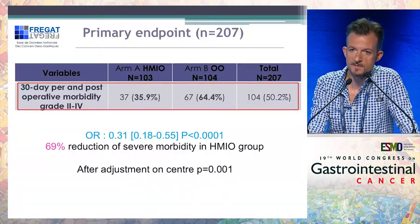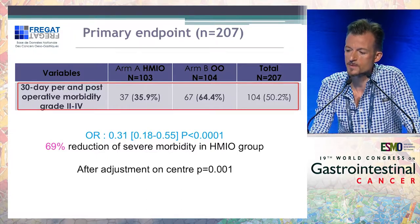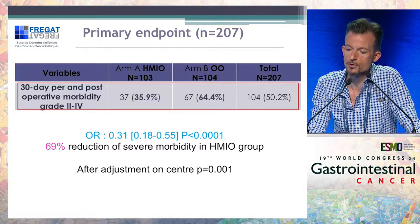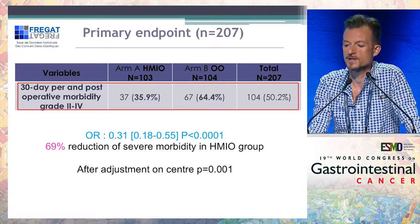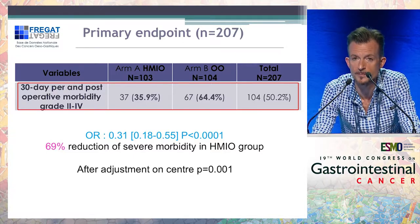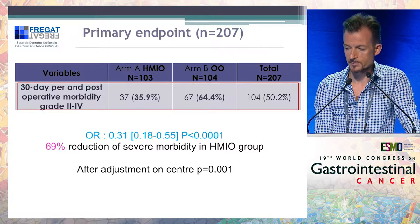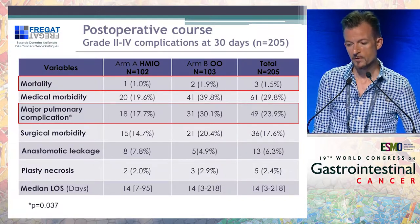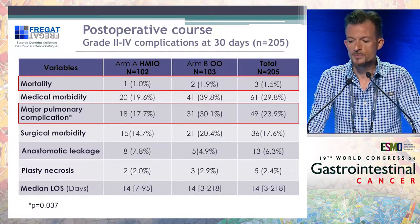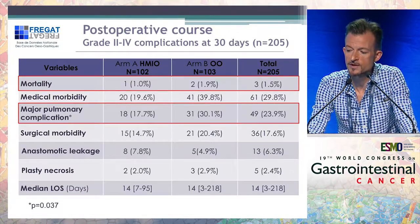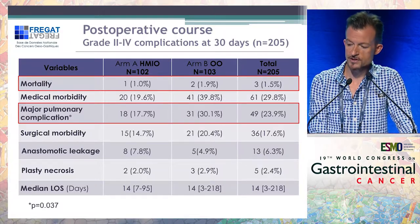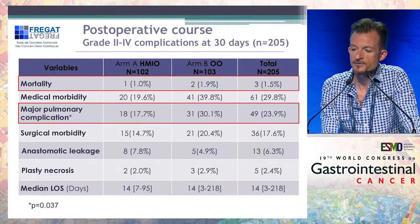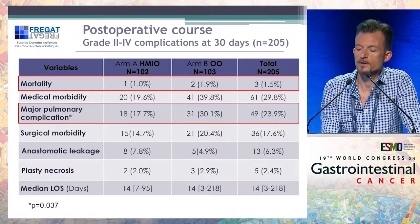Regarding the primary endpoint of the study, already presented at the ASCO meeting two years ago, the rate of complications was significantly lower in the hybrid minimally invasive approach with an odds ratio of 0.31 — meaning a 69% reduction of severe morbidity after laparoscopic gastric mobilization — with no impact of center on this result. The major benefit was observed for major pulmonary complications, which were significantly lower in the hybrid group compared to the open group, without significant difference in other complications, specifically surgical complications. Regarding postoperative mortality, no significant difference, but again a two-fold higher rate in the open group compared to the hybrid group.